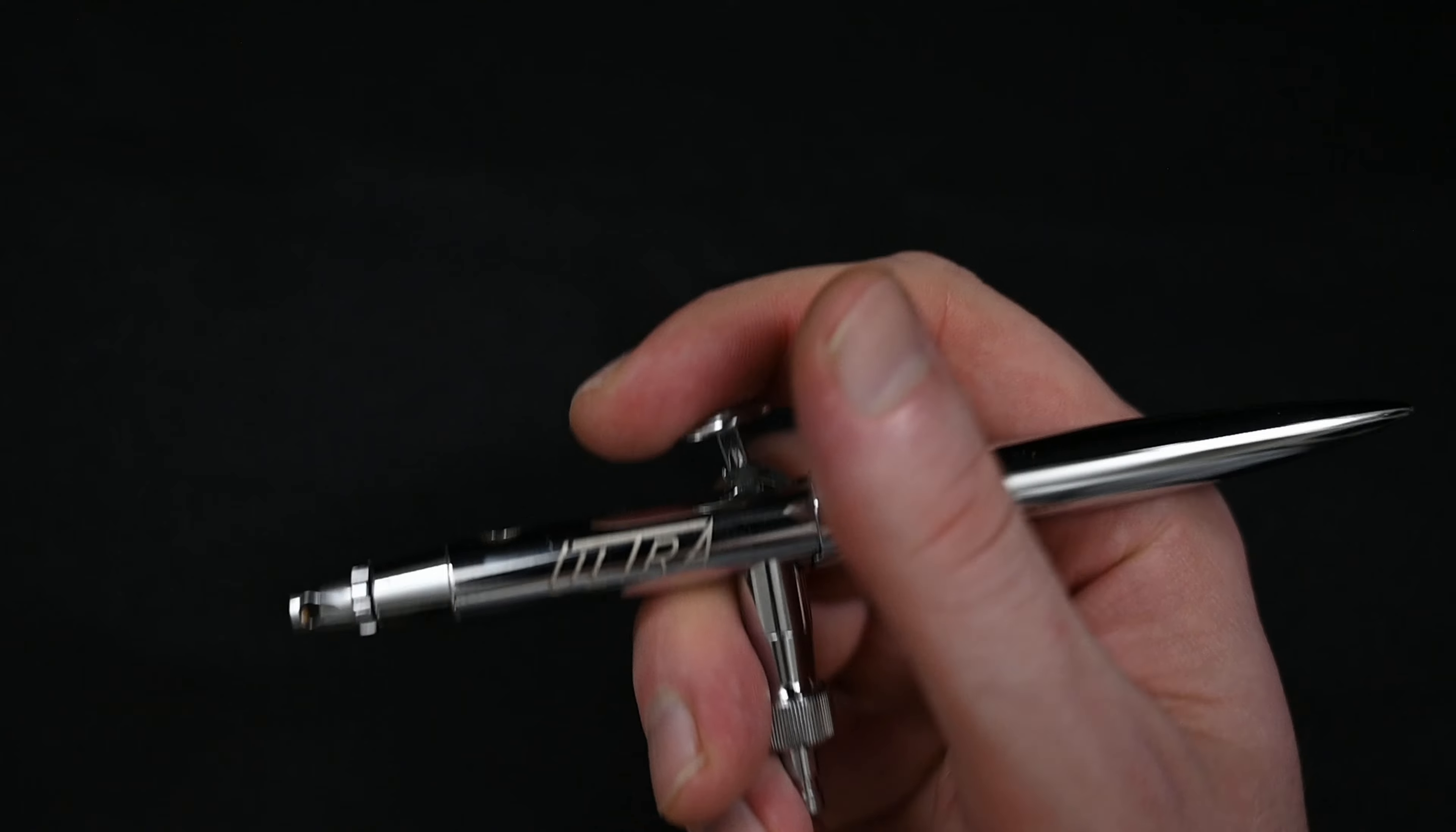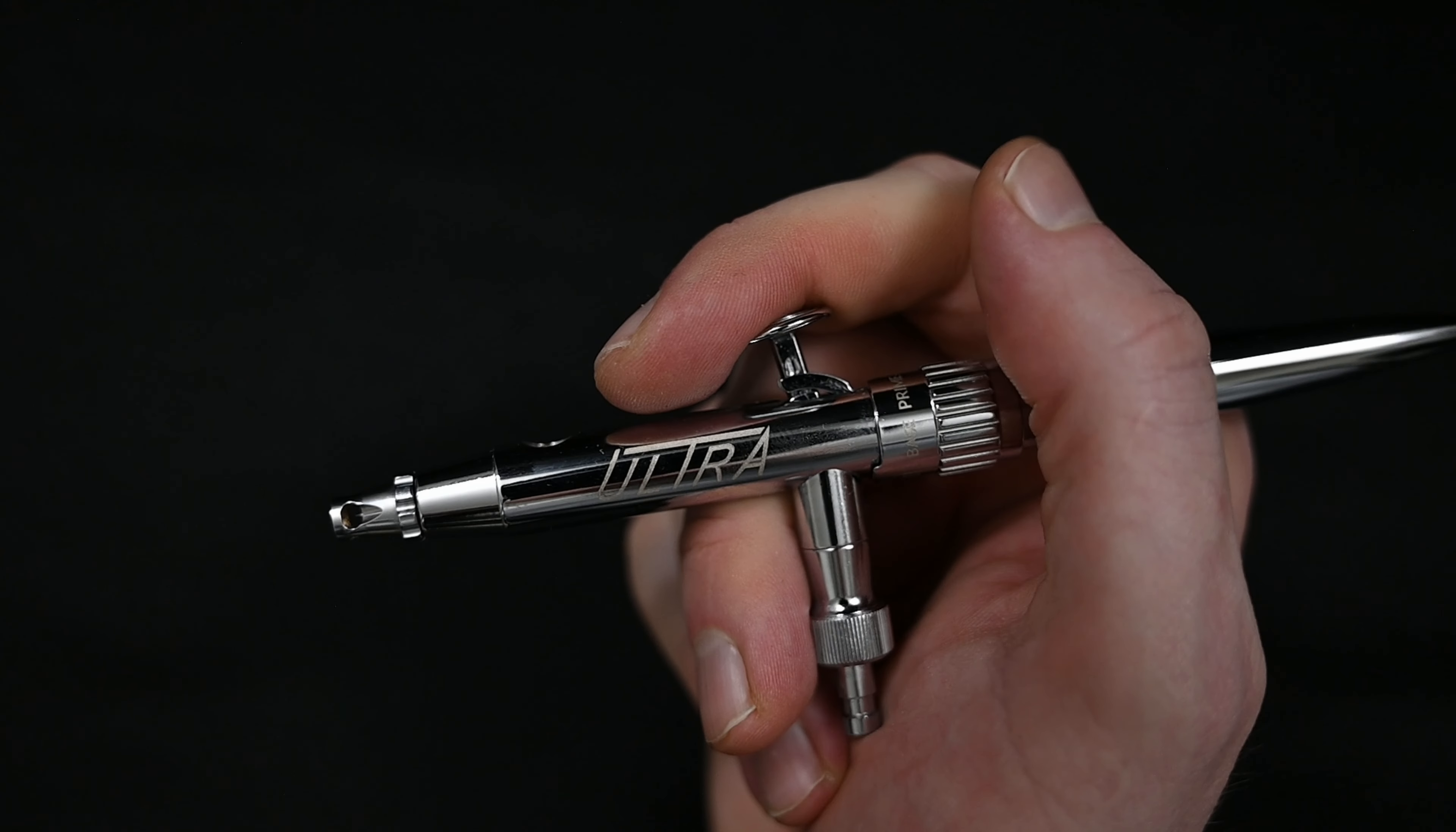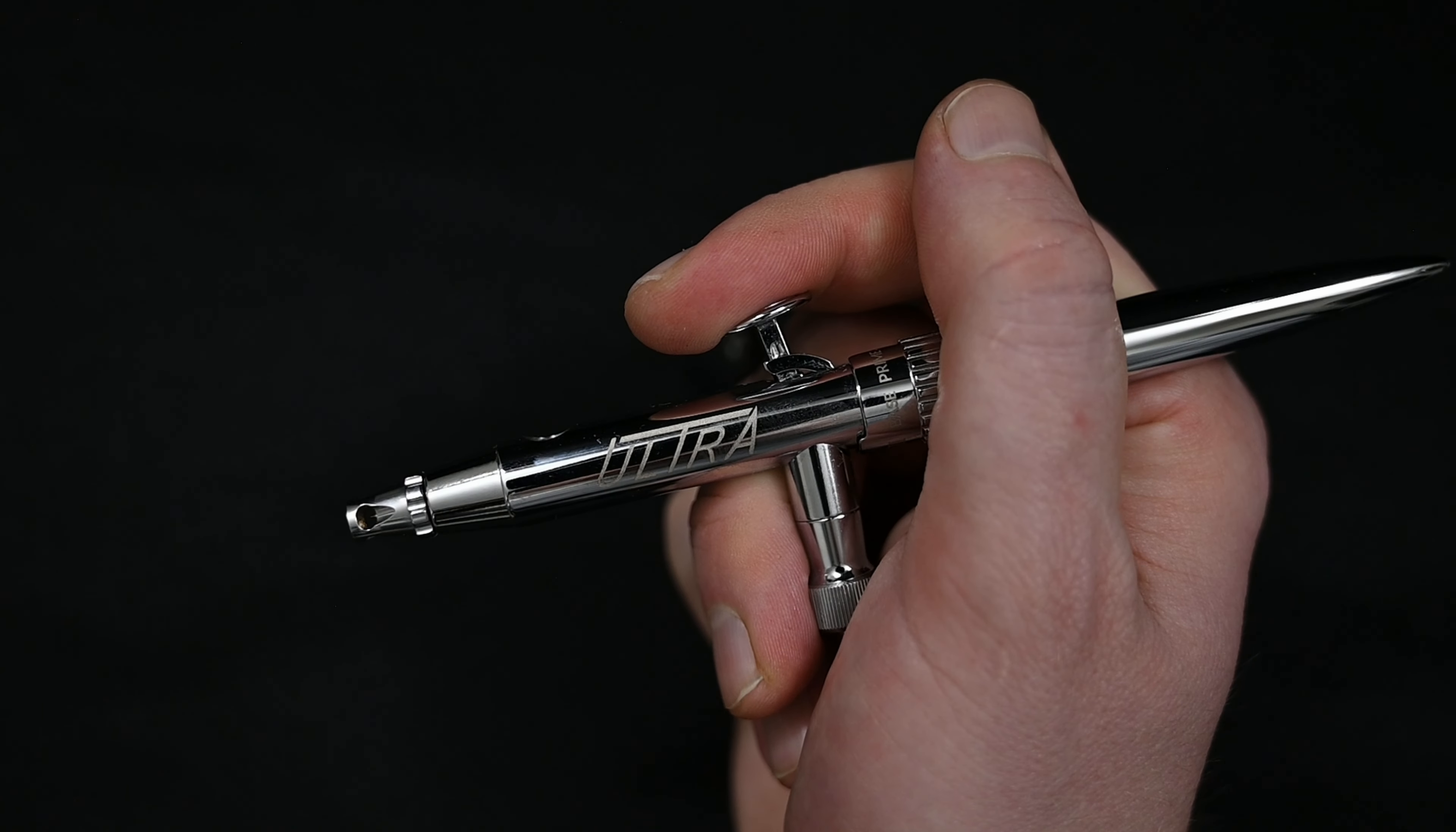Another nice feature is that the Ultra comes with a paint cup that you're able to remove. When the cup is off the airbrush, you're able to add about four drops of paint into this opening, which is plenty for a lot of applications. And what I love about this is that it makes the Ultra feel like a side feed airbrush. And what's great about a side feed is that there's no cup on top to obstruct your view, so it makes it really easy to see whatever it is you're painting.